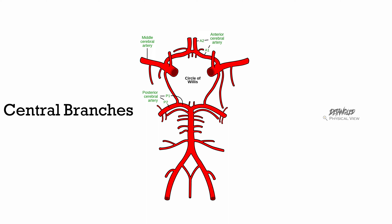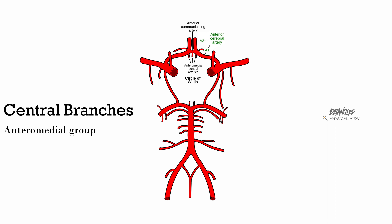Central branches are very short and numerous; these are end arteries. There are six groups: an anteromedial group, two anterolateral groups, a posteromedial group, and two posterolateral groups. The anteromedial group arises from the anterior cerebral and anterior communicating arteries. The anterolateral groups are two groups — the left and right sides.